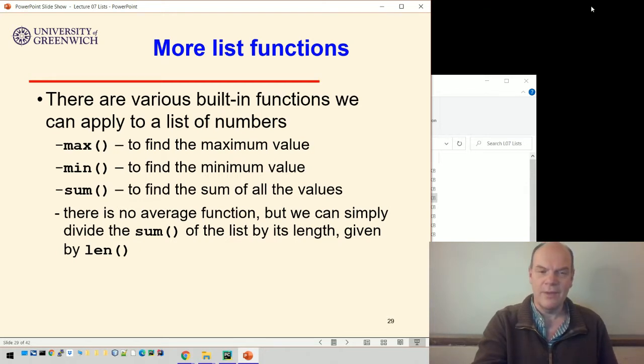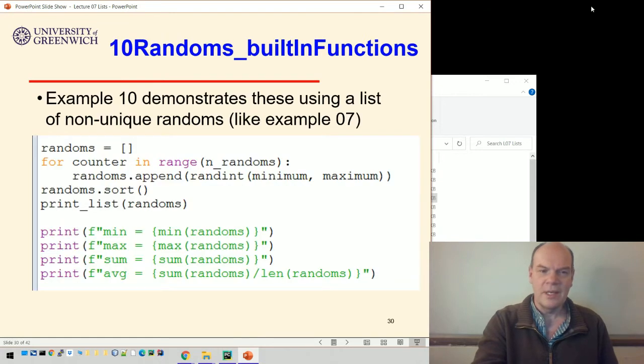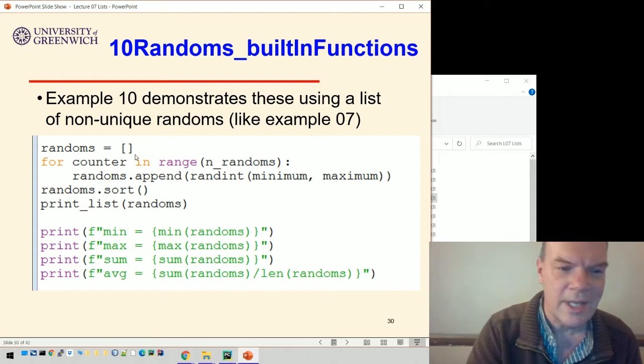...you can just take the sum of the list and divide it by its length, and that gives you the average value in the list if it's a list of numbers. So for example, here's a bit of code that demonstrates just that. This generates a bunch of randoms.